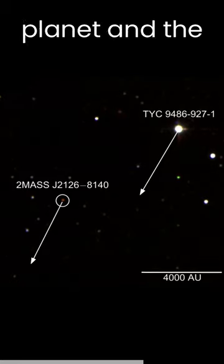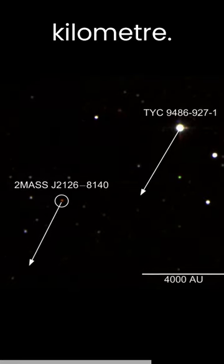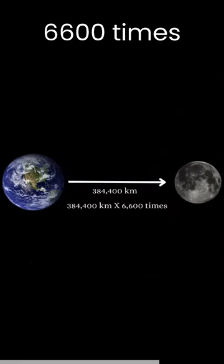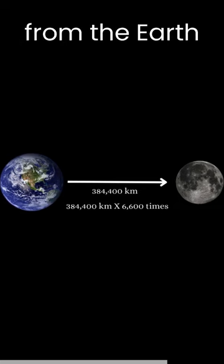The distance between the planet and the star is about 1 trillion kilometers. That is about 6,600 times the distance from the Earth to the Moon.